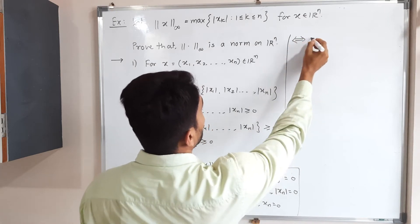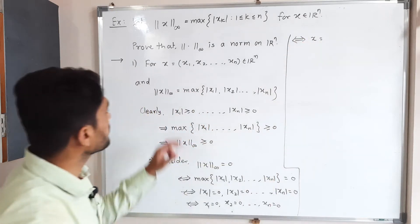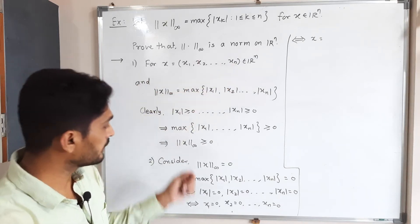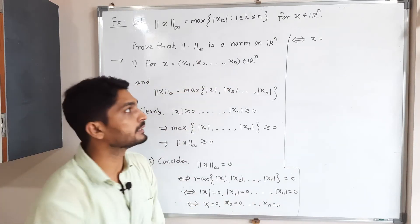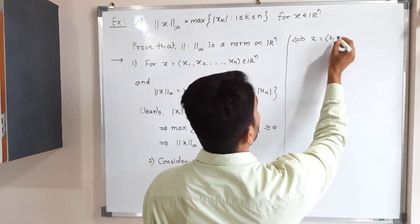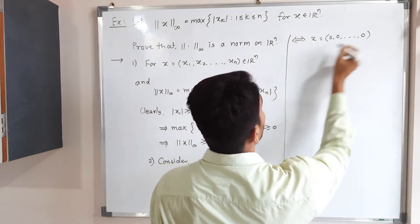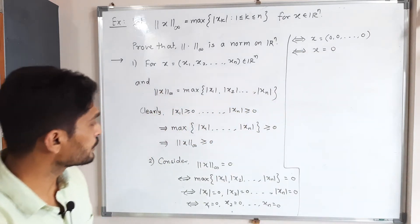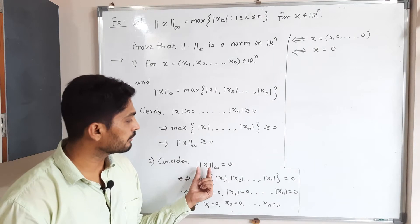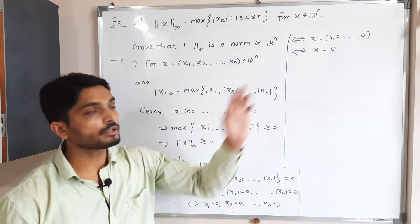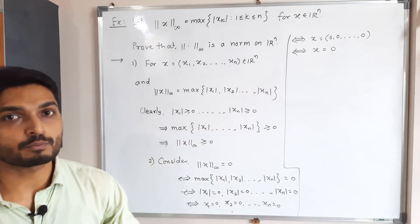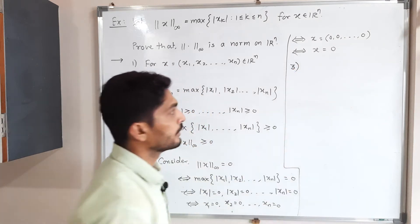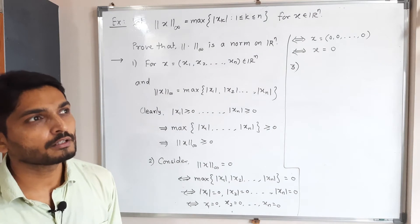Since x has n components and we have proved each component is 0, that means x = (0, 0, ..., 0), i.e., x = 0. We started with ‖x‖∞ = 0 and concluded x = 0, so the second property is proved.